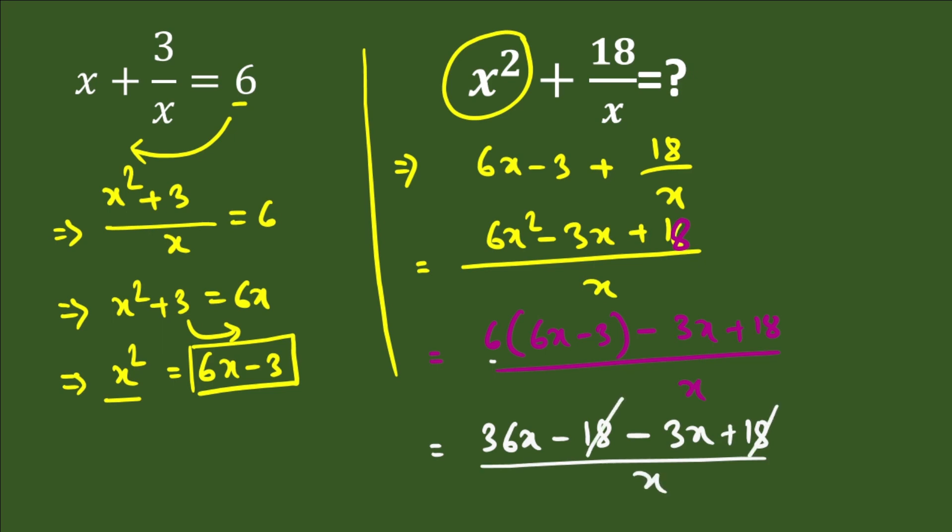Now at the last we have 36x minus 3x, that is 33x, and that's divided by x. Here x and x will be cancelled, so we are left with 33. So 33 is the answer to this problem.